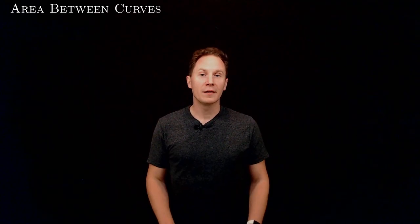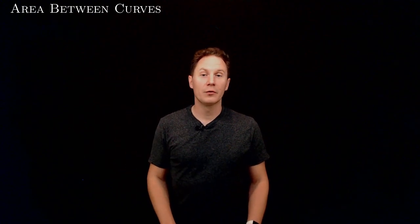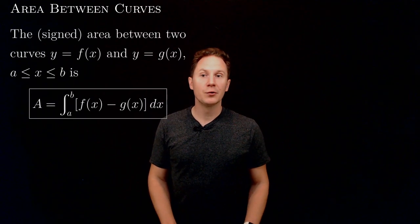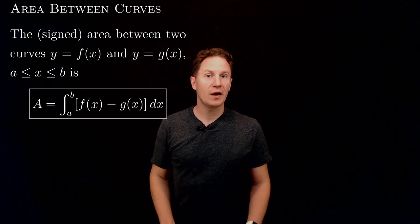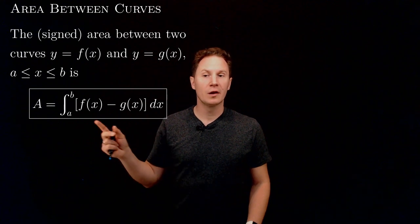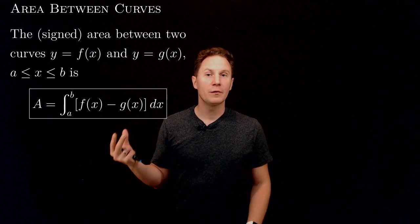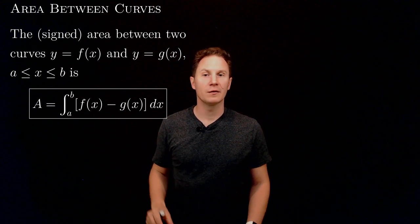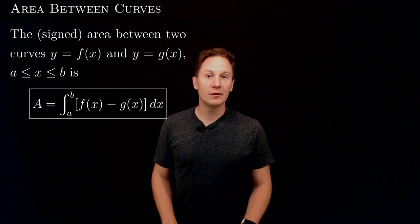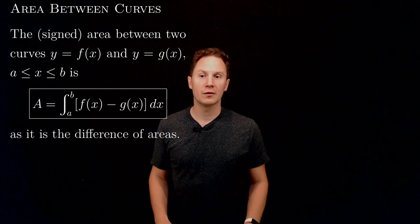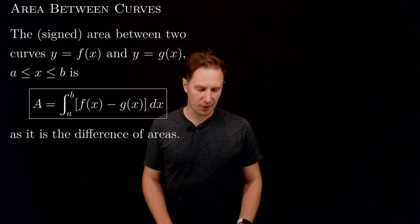Since integrals are useful in finding areas, we would expect them to be helpful when looking for the area of a region between two curves. More specifically, if we consider two curves given by graphs of functions f and g over an interval a, b, then the signed area between these two curves is given by the definite integral from a to b of f(x) minus g(x) dx. This is because the integral of the difference is the difference of the integrals, and therefore the difference of the signed areas.